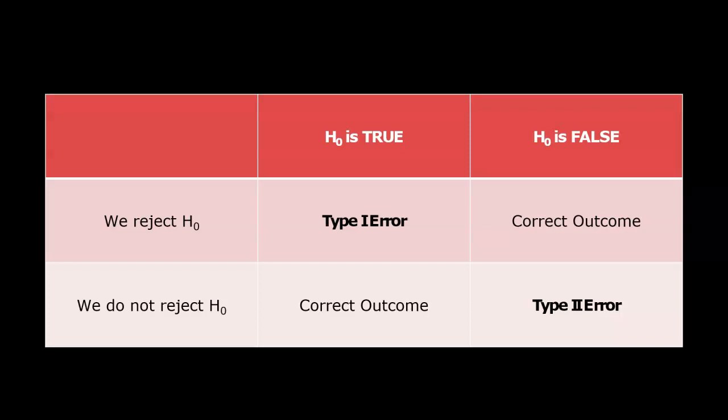When the null hypothesis is false, the correct outcome would be to reject it. But if we do not reject it, that is called a type 2 error.